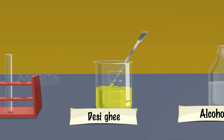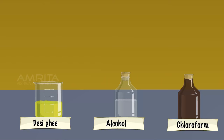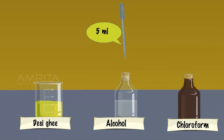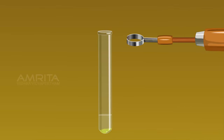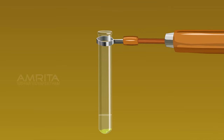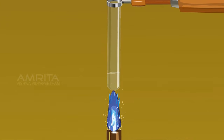Now take a small amount of desi ghee in another test tube. Using another dropper, take about 5 ml of alcohol and add it into the test tube containing desi ghee. Desi ghee forms a lower layer. Hold the test tube with the test tube holder and heat it over the Bunsen burner. The lower layer of ghee dissolves on heating.